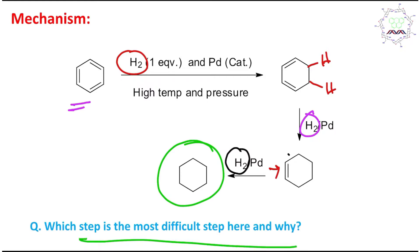Now a simple question, students: which step is the most difficult step, and why? Because if you understand this, it will be easier to get the right answer. Actually, the first step is most difficult. Why? Because in this case you may see that aromaticity is lost.